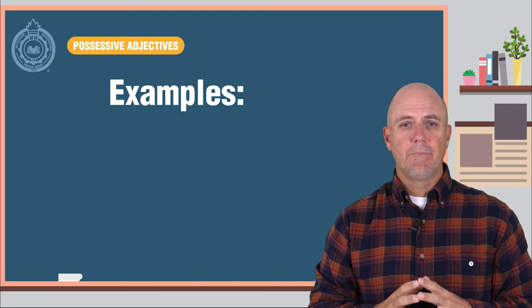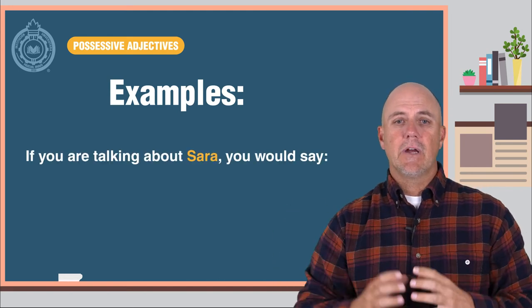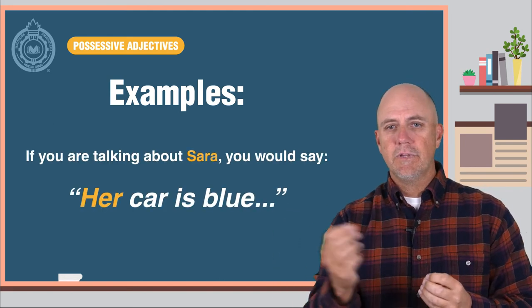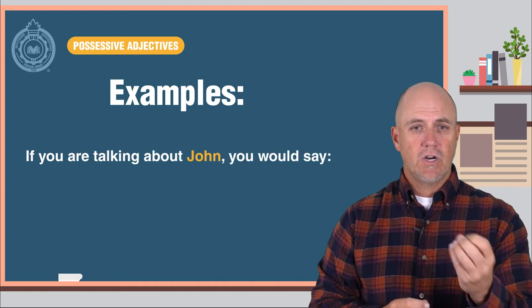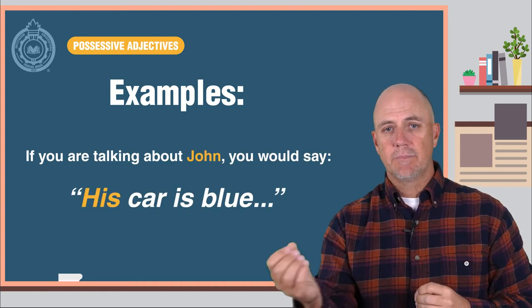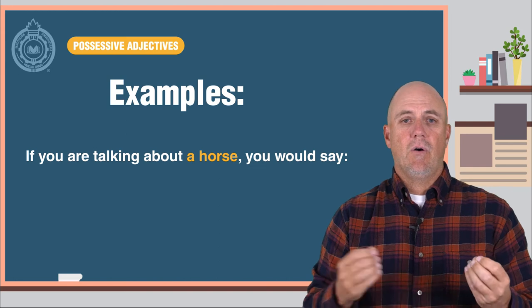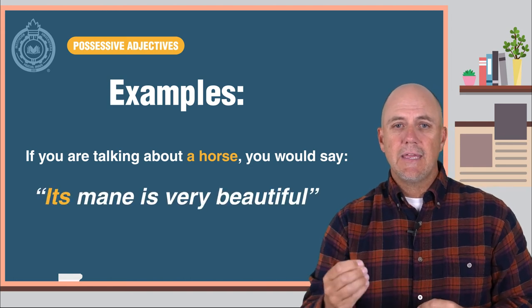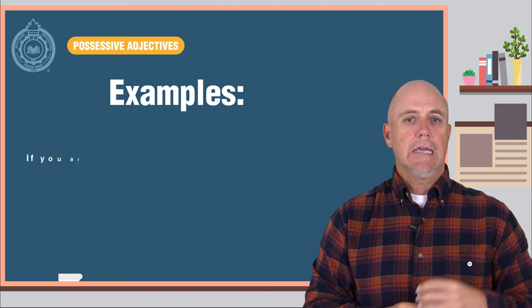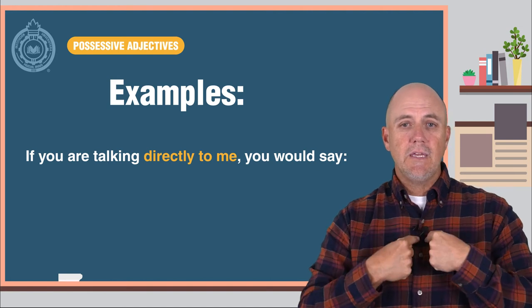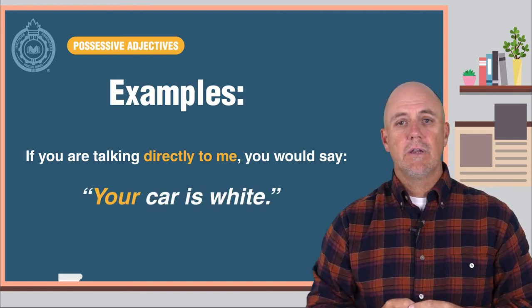Here are some examples. If you are talking about Sarah, you would say, her car is blue. If you are talking about John, you would say, his car is blue. If you are talking about a horse, you would say, its mane is very beautiful. If you are talking directly to me, you would say, your car is white.